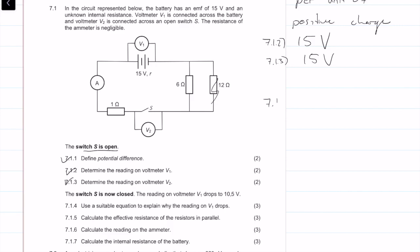Question 7.1.4: the switch is now closed, so we have a closed circuit. The reading on voltmeter V1 drops to 10.5 volts.